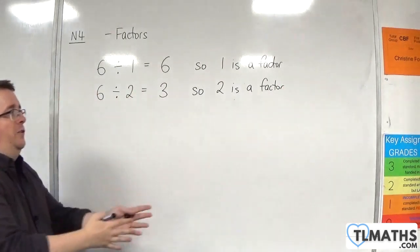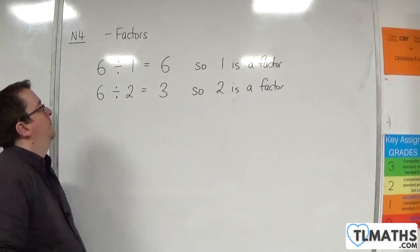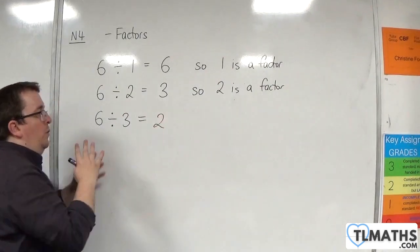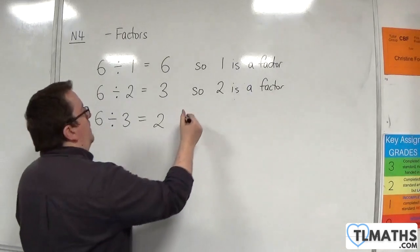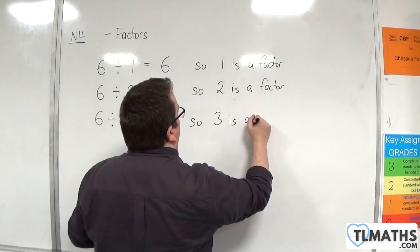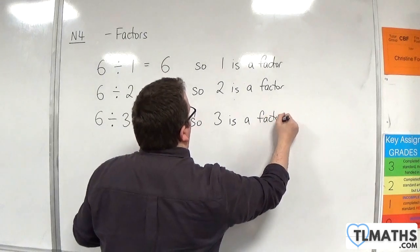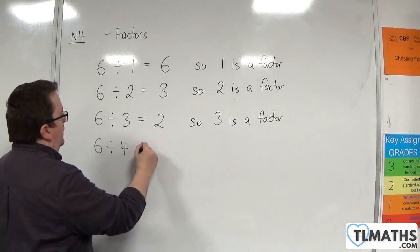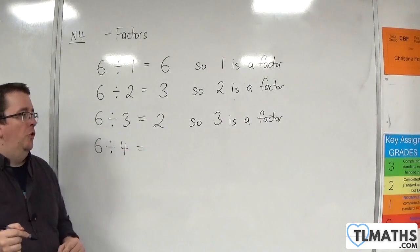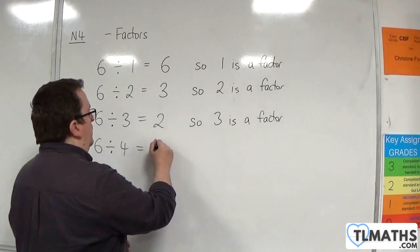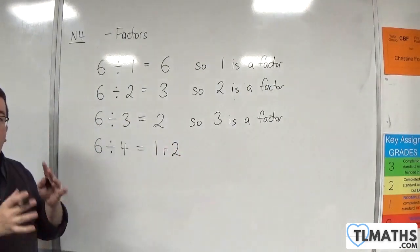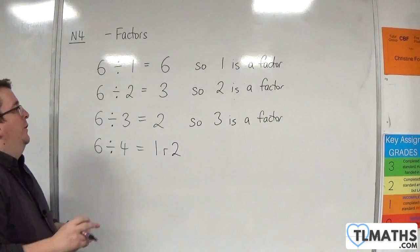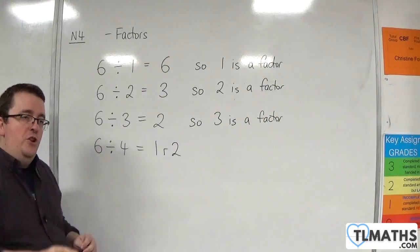Because we can divide 6 by 2 cleanly. If I did 6 divided by 3, then I get 2 with no remainder. So that means 3 is a factor of 6. But when I get to 4, 6 divided by 4, that goes in once remainder 2. We can fit 4 in there once, but there's that 2 left over. So 4 is not a factor.